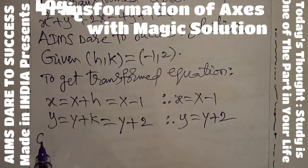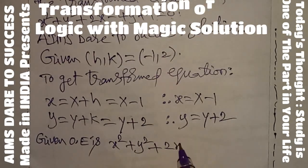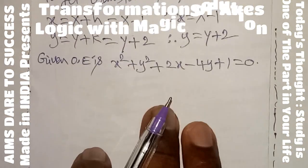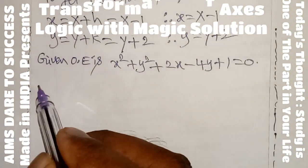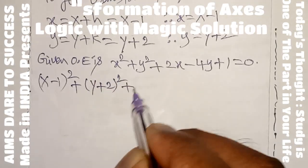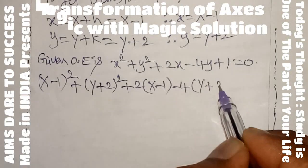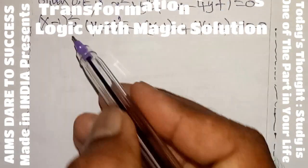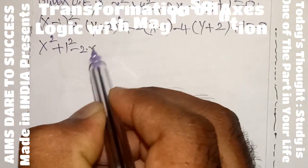The given original equation is x² + y² + 2x − 4y + 1 = 0. Substituting the small x and small y values, we get: (X − 1)² + (Y + 2)² + 2(X − 1) − 4(Y + 2) + 1 = 0. The first term is in the form of (a − b)², which expands as a² + b² − 2ab.